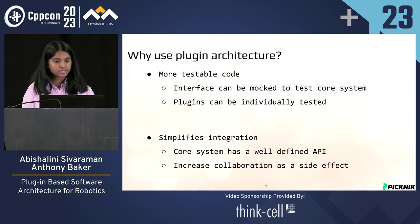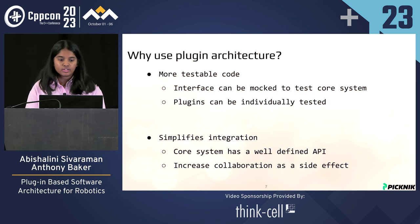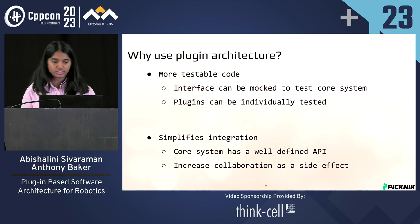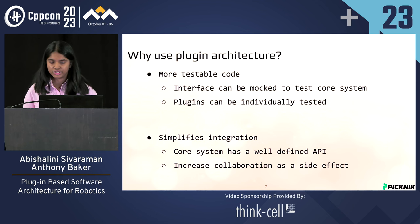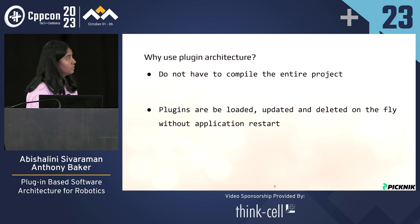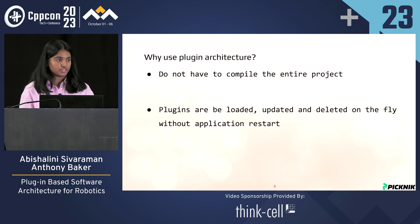Another reason to use this architecture is to write more testable code. Your interface can be mocked to test the core system and your plugins can be individually tested as well. Plugins also simplify integration — your core system should have a well-defined API and the plugins would have the implementation, which helps increase collaboration. You also do not have to compile the entire project every time you make a change in your plugin. Plugins can be loaded, updated, and deleted on the fly without an application restart.